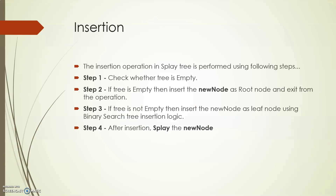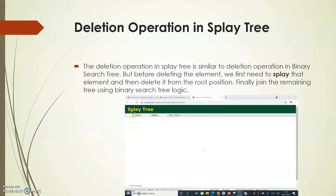For insertion: if the tree is empty, the node becomes the root. If not, follow binary search tree rules — greater values go right, lesser values go left. After insertion, select the required rotation and move the new node to the root position. For deletion: search for the node using binary search logic, move it to the root using splaying, delete it from the root, and join the remaining tree using binary search tree logic.